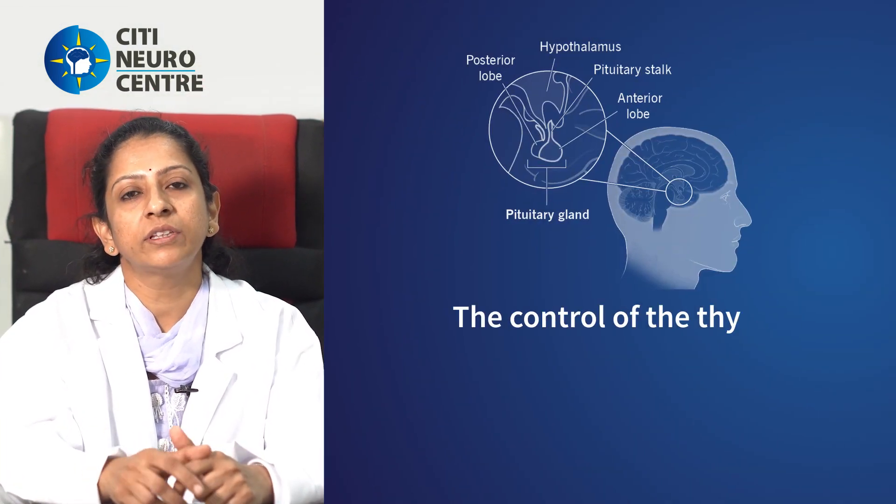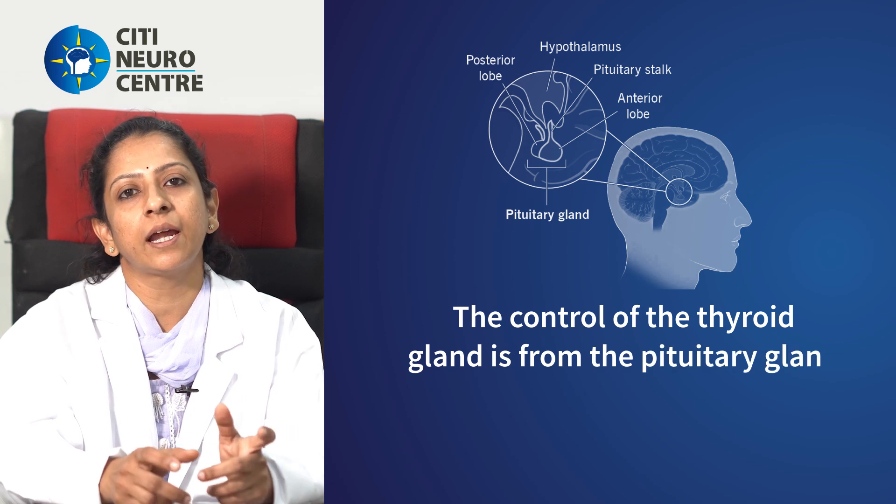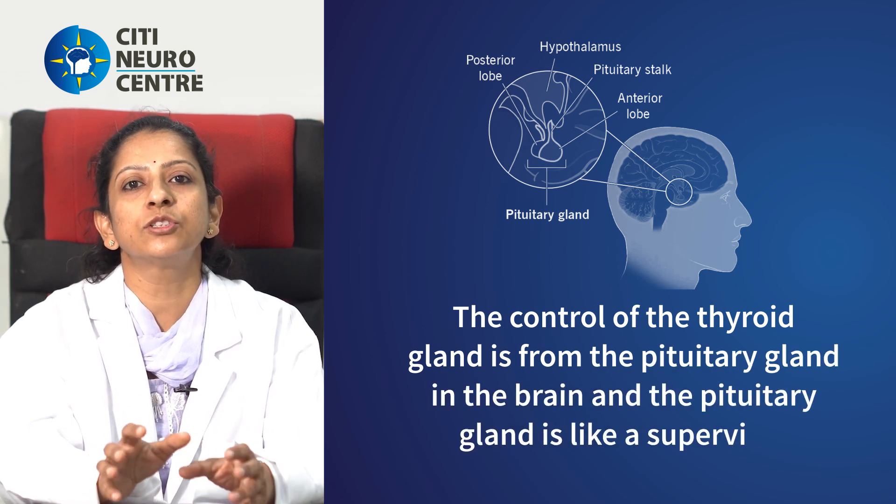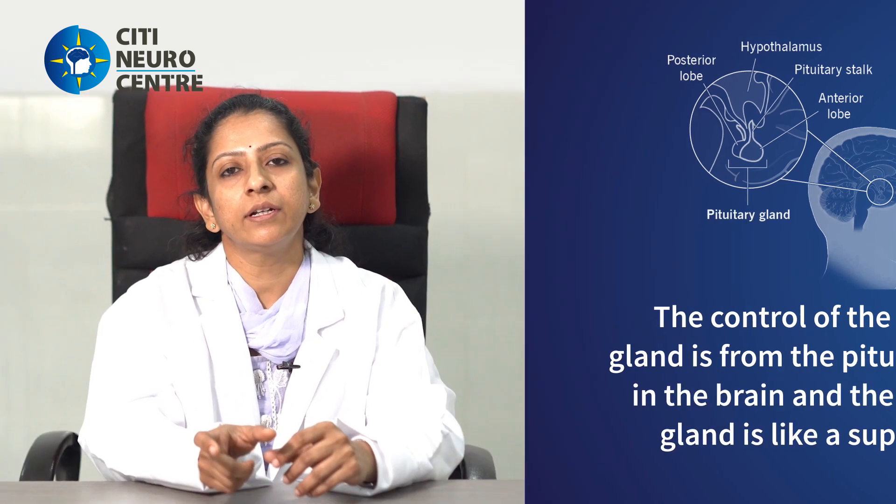The control of the thyroid gland is from the pituitary gland in the brain, and the pituitary gland is like a supervisor. If the thyroid gland is secreting less or too much of hormones, the pituitary gland releases its hormone TSH, which will go to the thyroid and tell it what is to be done. So whenever there is any increase or decrease in thyroid hormone secretion, you get thyroid diseases.